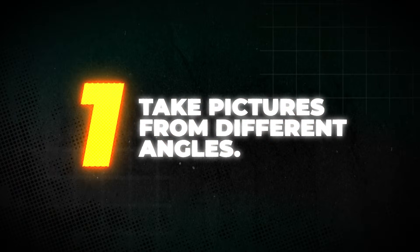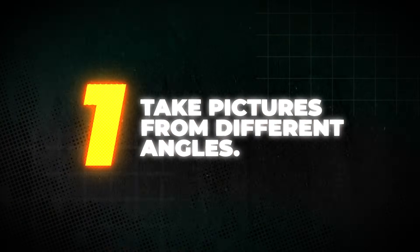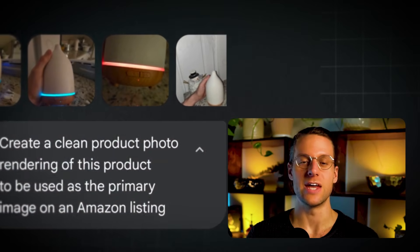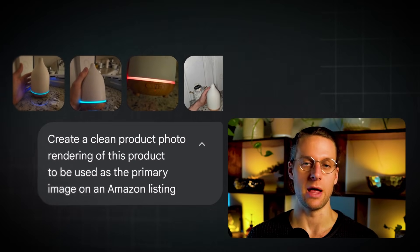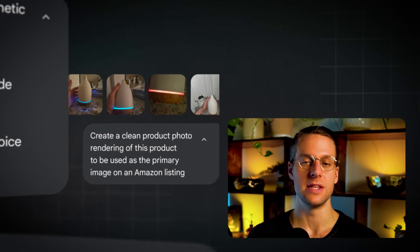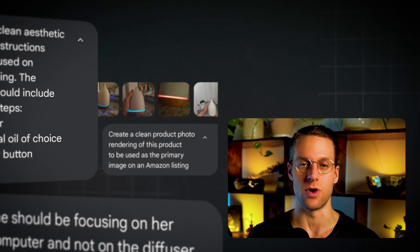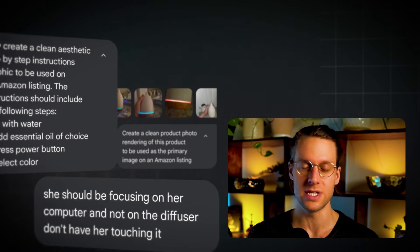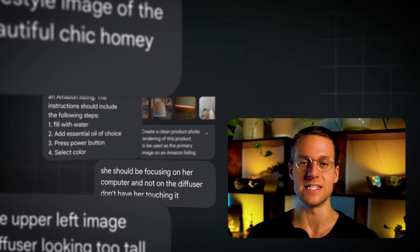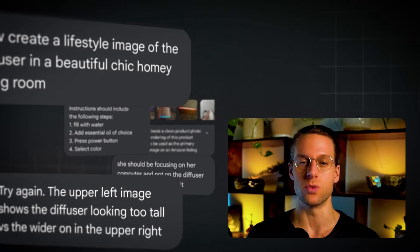The number one tip is take photos from different angles and different zoom distances of the product to give the model enough context to properly render it. In all the sellers I've worked with so far on helping them use Nano Banana Pro for their Amazon listings, this is the one thing I see everyone get wrong. Everyone's focused on the prompt and the wording of the prompt, but what's more important is giving the model the right visual references.